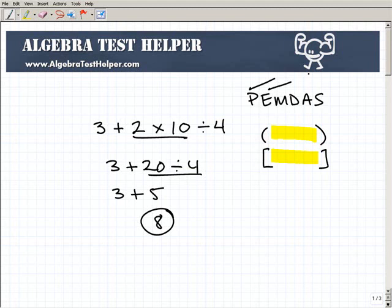E is powers. So if you see a power like say 2 cubed, go ahead and do that next. That would be 8. And then M and D stand for multiplication and division.